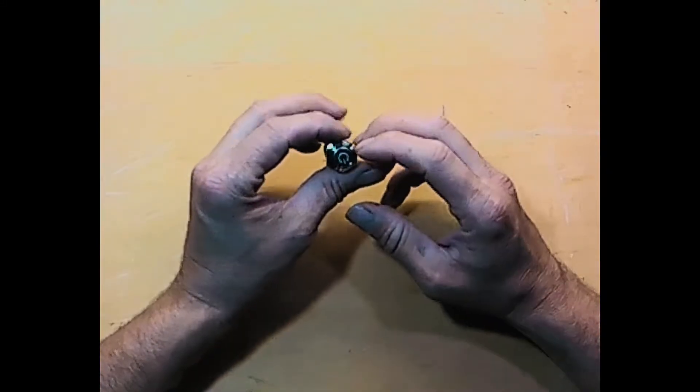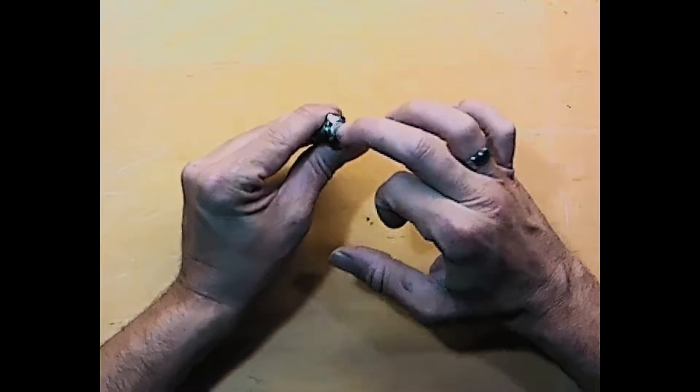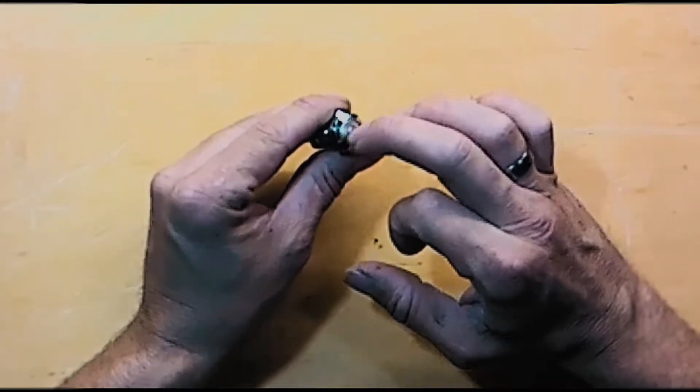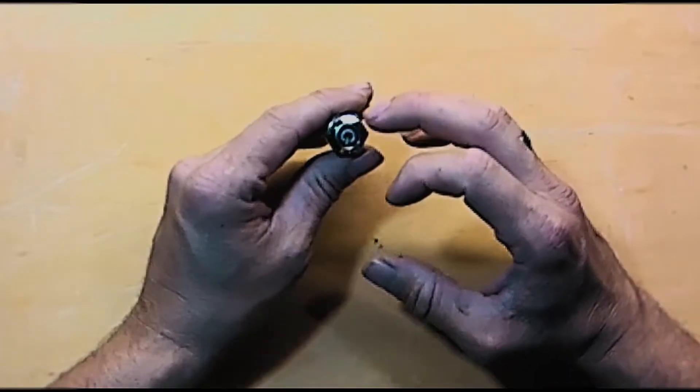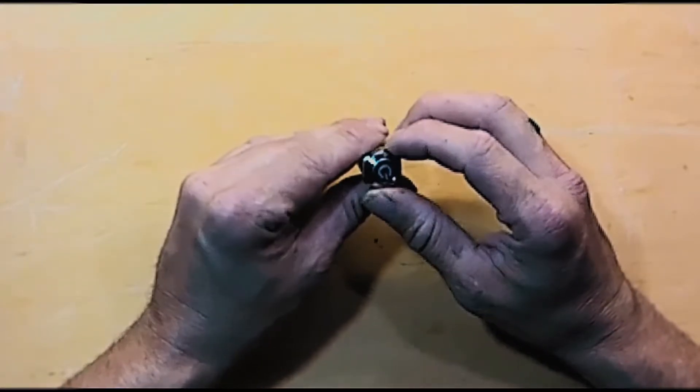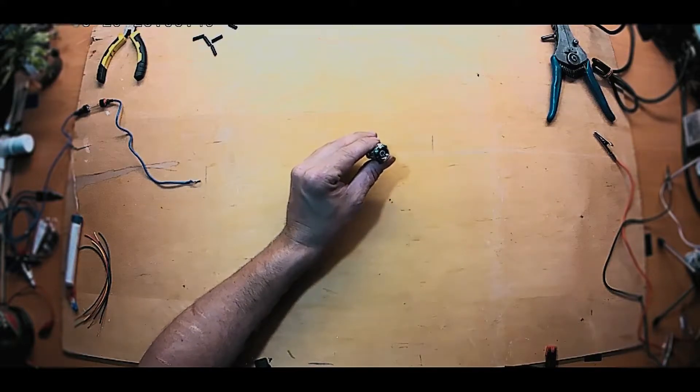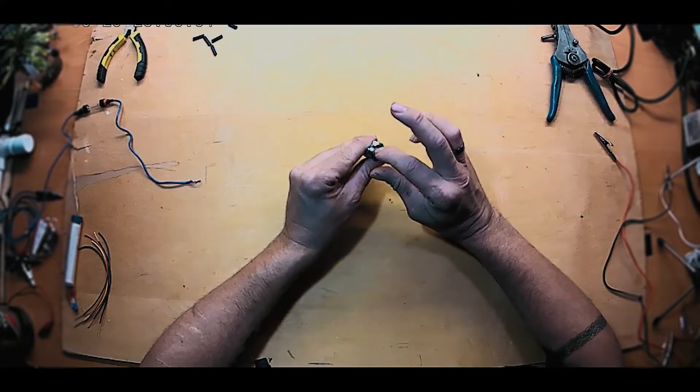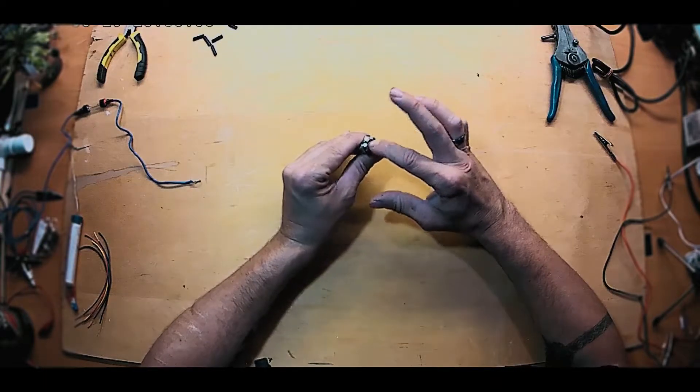So a latching switch is a push-button switch that sticks when you push it in and holds there, and then when you push it again, it releases. So this one here has multiple ways you can wire it up. Basically you can have it on when the switch is in the pushed-in position. You can have it off that way. You can have it on when it's out and off when it's in.